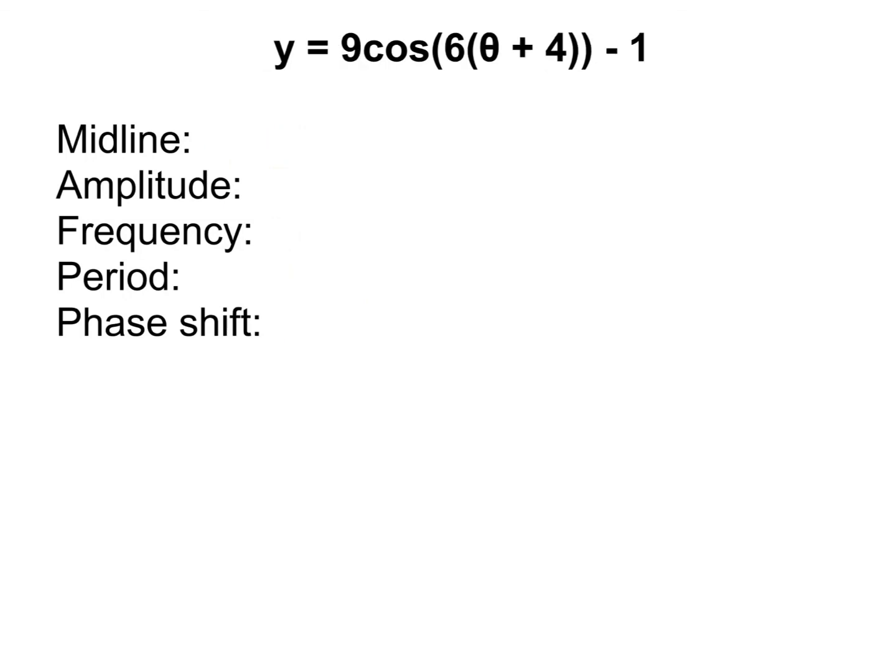One last problem. Again, write down this problem. Try to do it all on your own first. And then, resume for the explanation. So, my midline comes from whatever is added or subtracted on the end. So, it's going to be y equals negative 1. My amplitude is the number multiplied out front. So, that is 9. My frequency here, that is whatever is multiplied inside the parentheses. So, my frequency here is 6.